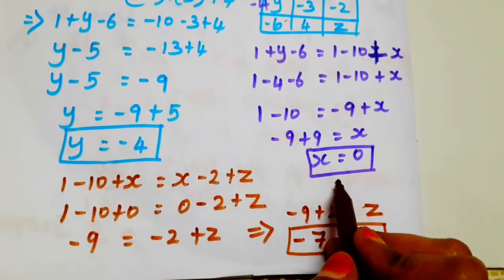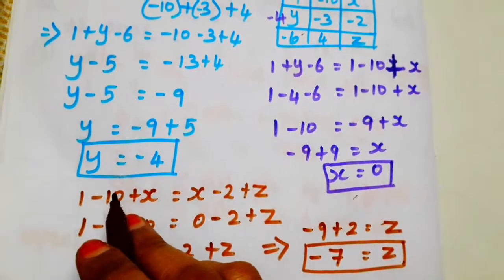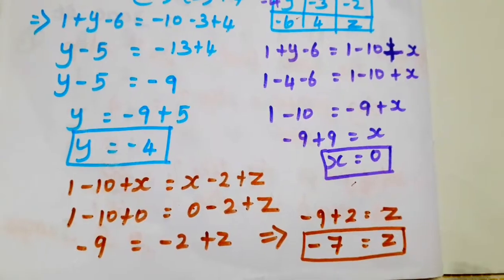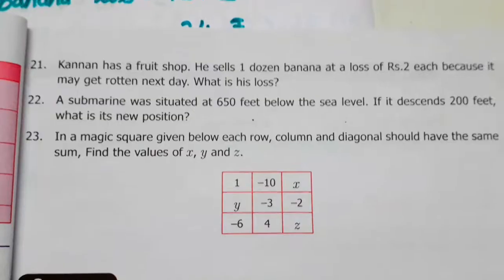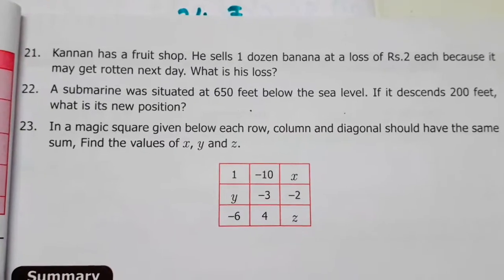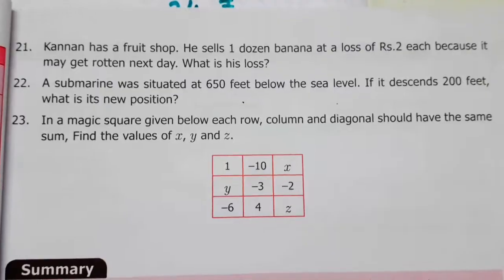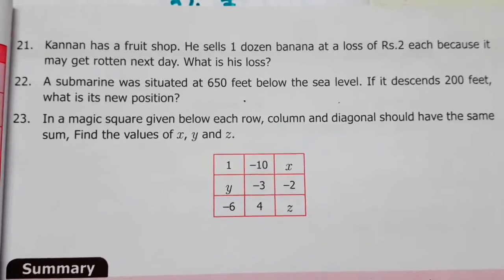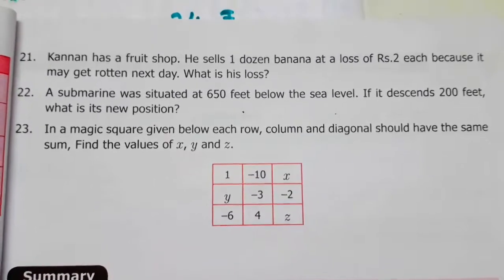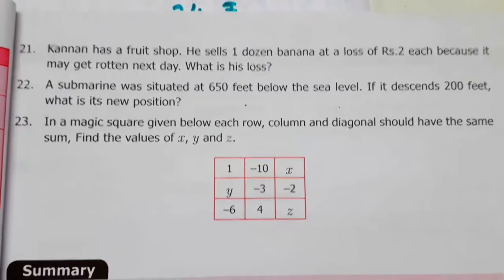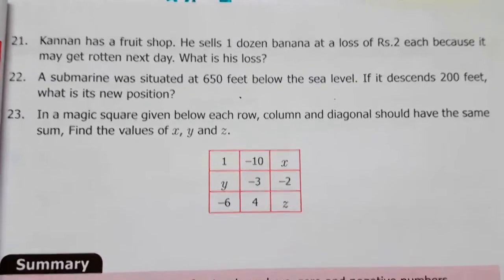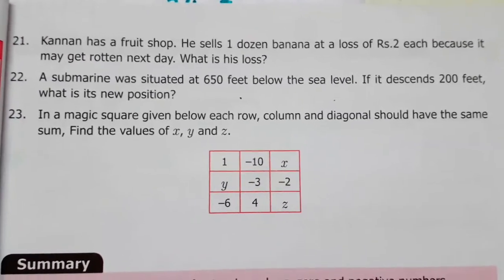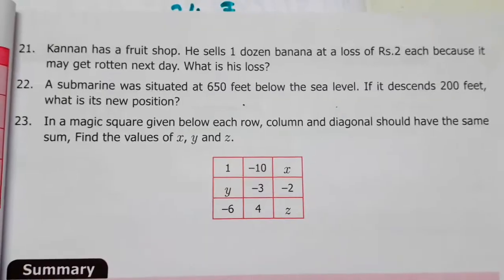So x is equal to 0, y is equal to minus 4, z is equal to minus 7. Students, exercise 1.6 is now complete. You need to complete all problems and mark them. The number system section is complete.